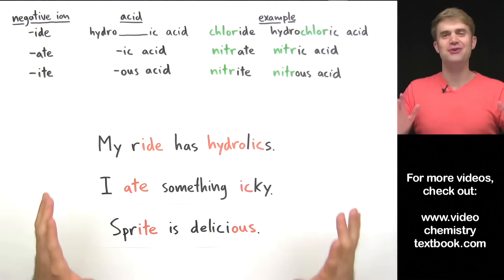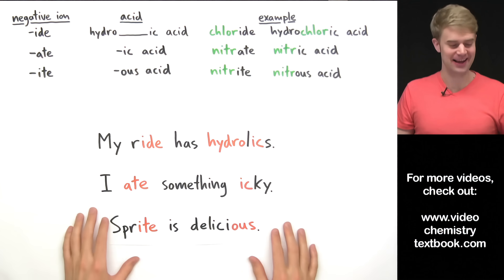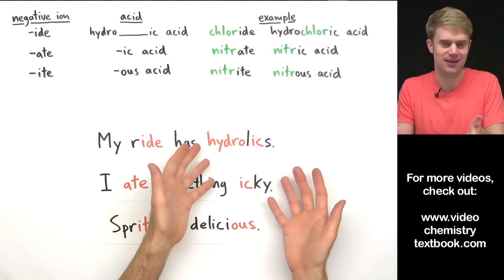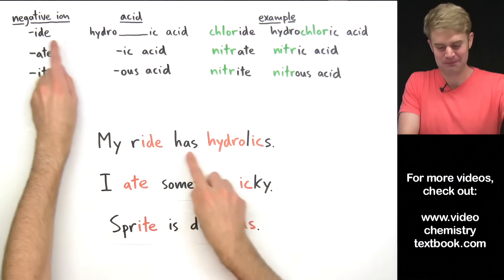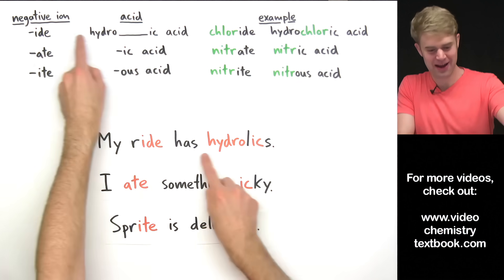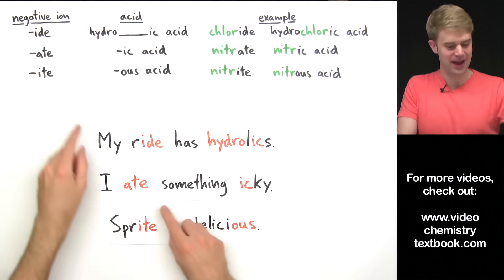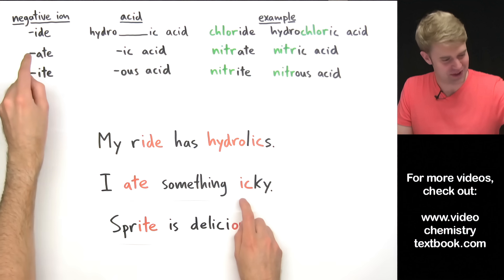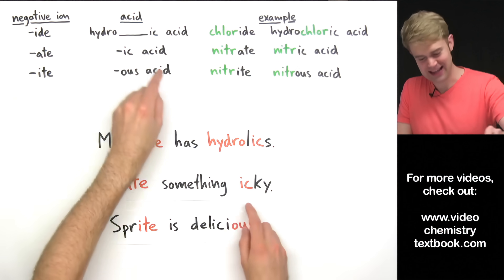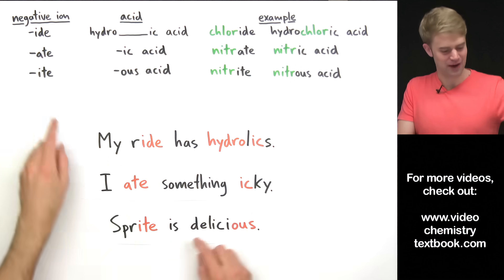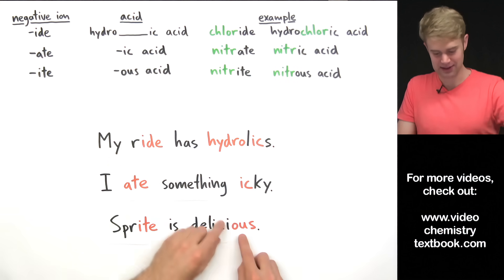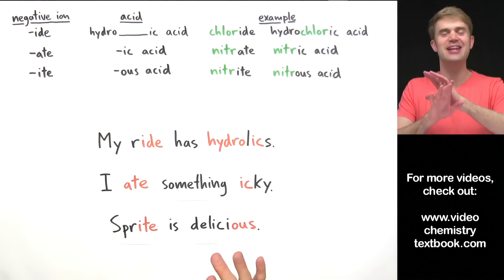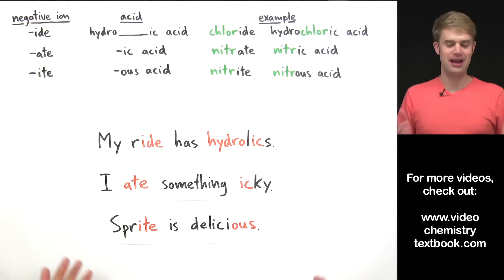So these are the rules for naming acids based on the name of the negative ion. How are you going to remember them? Here's a great mnemonic: 'My ride has hydraulics' — so -ide becomes hydro-ic. 'I ate something icky' — acids containing ions with -ate at the end are named with -ic. And 'Sprite is delicious ous' — I-T-E becomes O-U-S. Remember these three sentences and you'll never have a problem with naming acids.